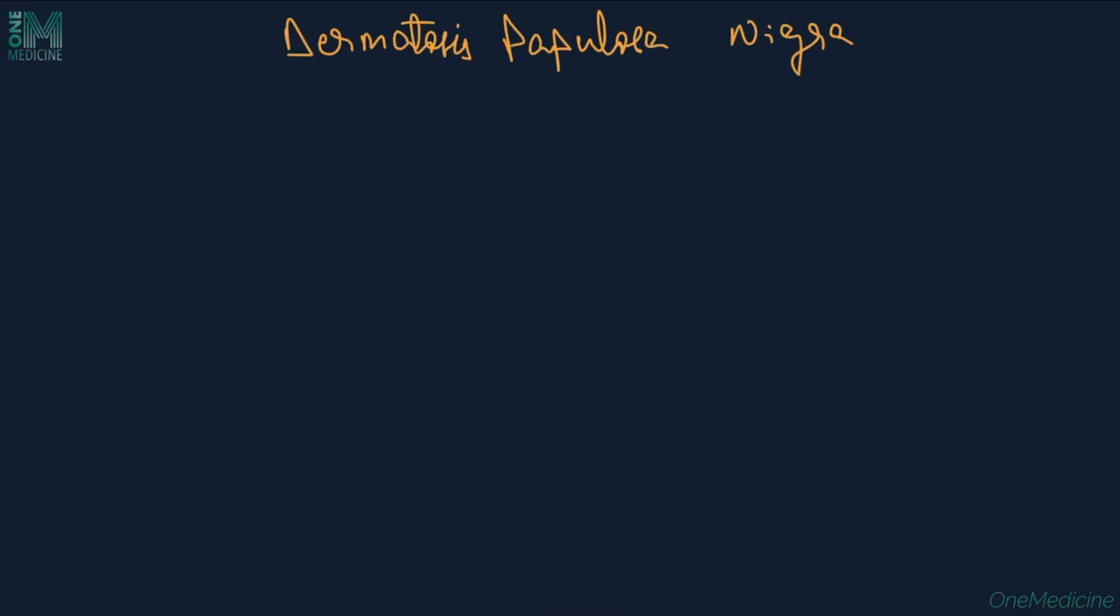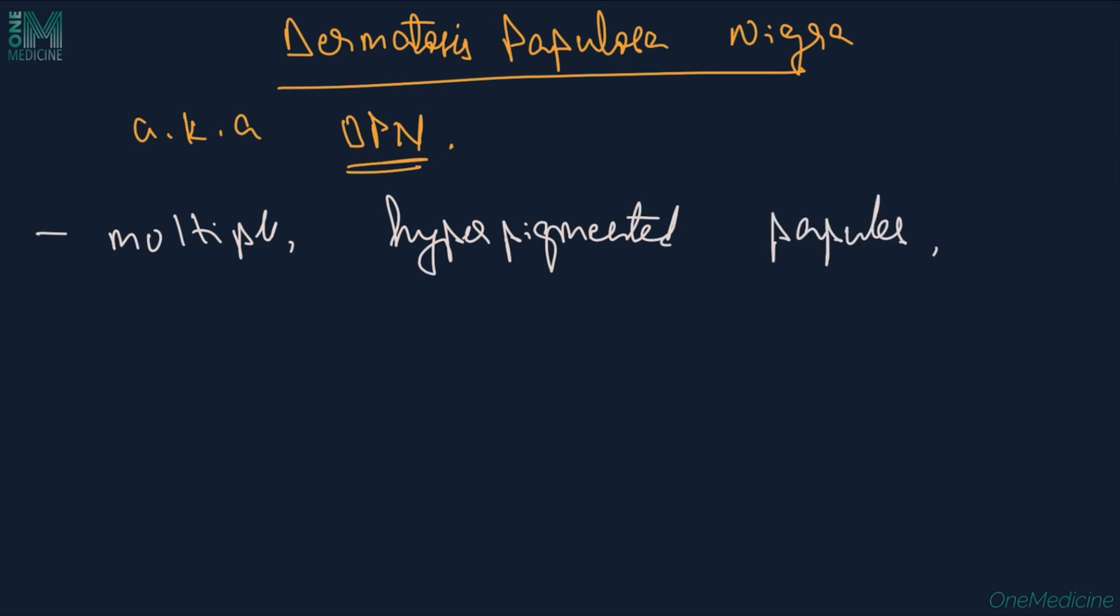Dermatosis papillosa nigra, otherwise commonly called DPN, is characterized by the presence of multiple hyperpigmented papules measuring 1-5 mm on the face of individuals with darker skin tones.